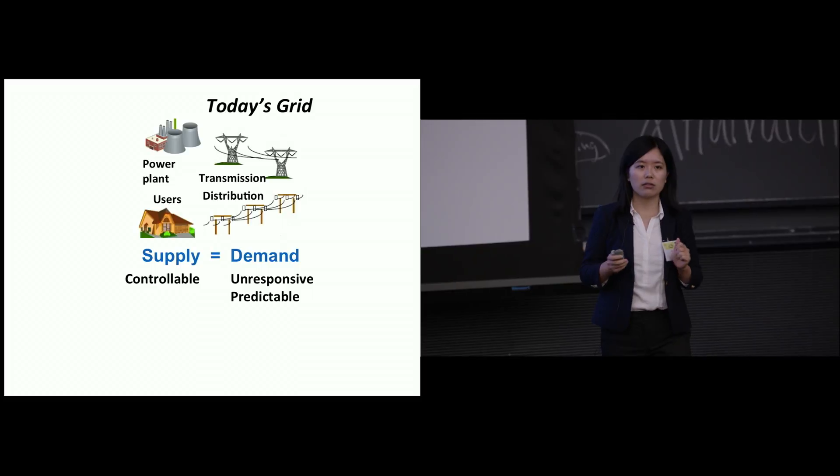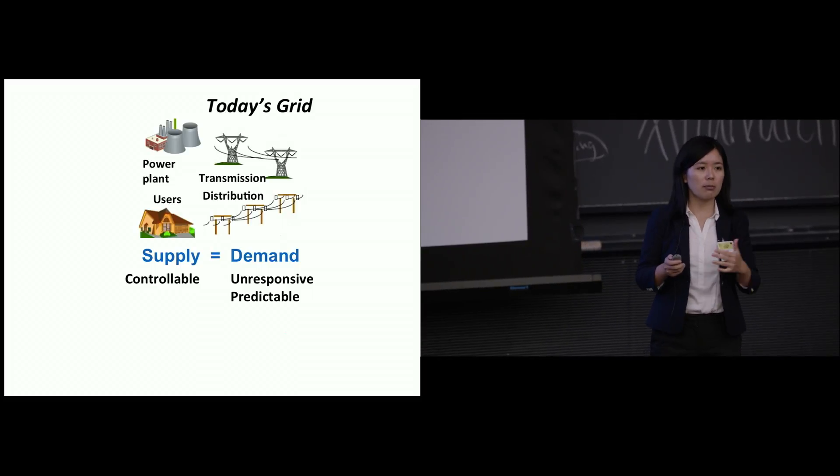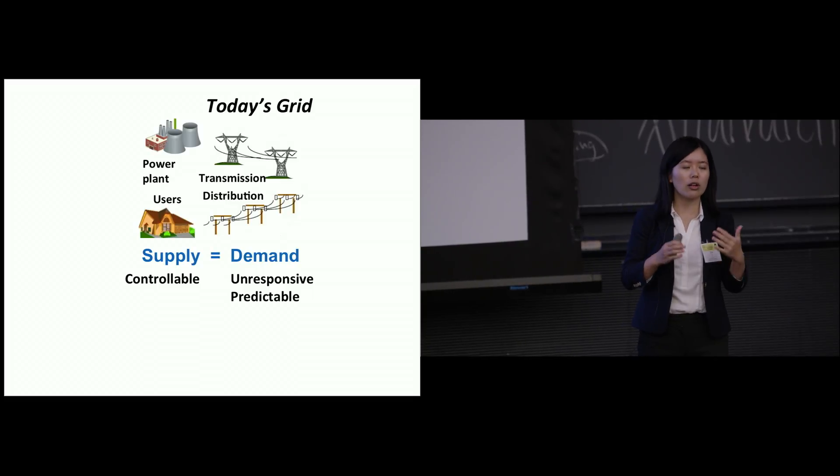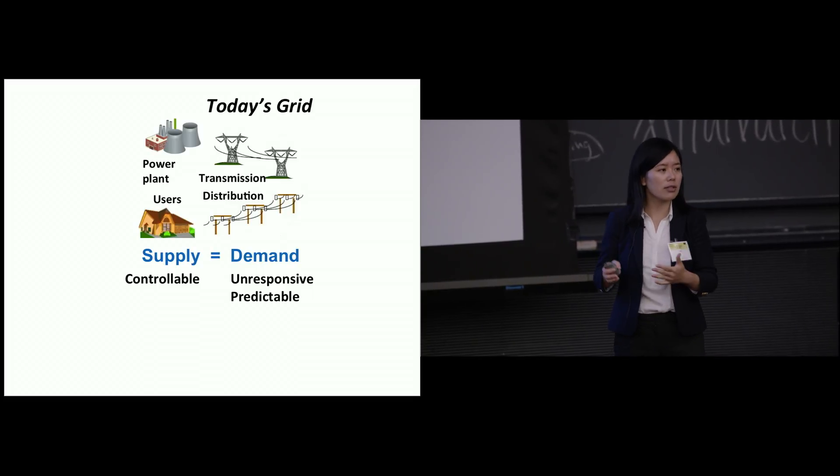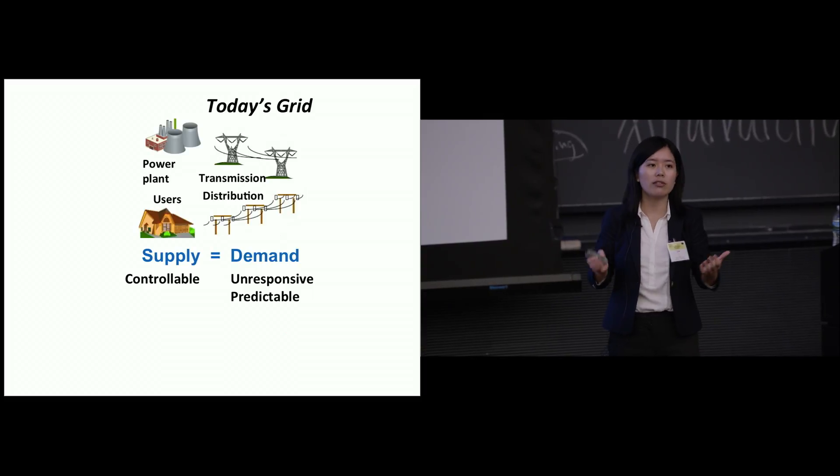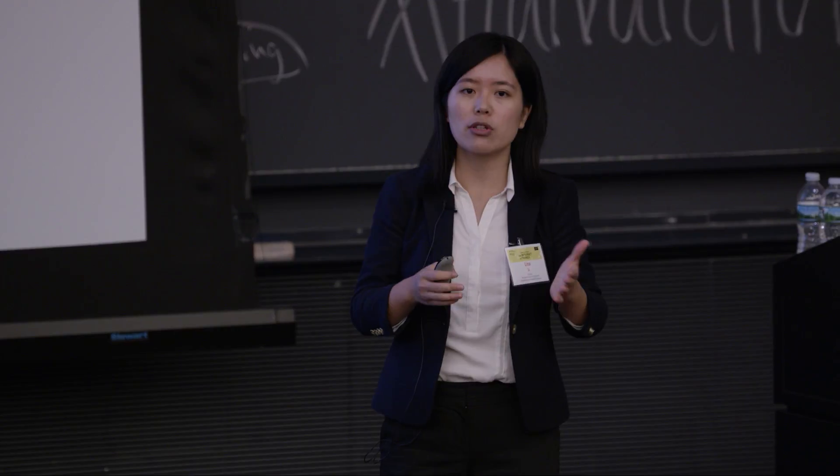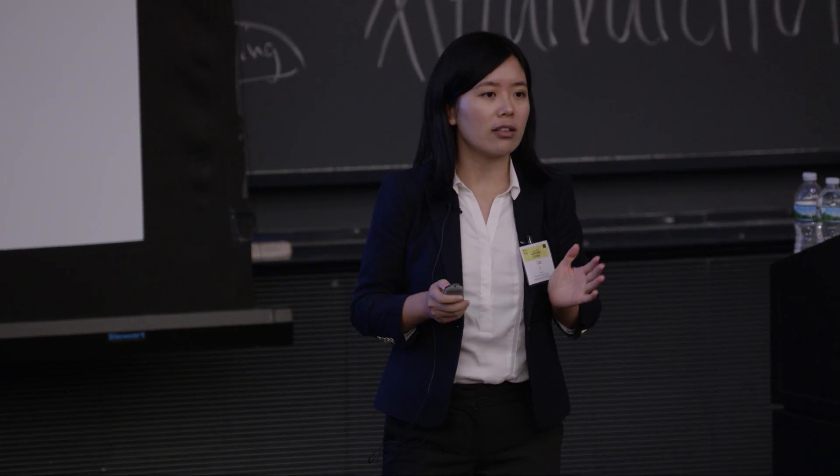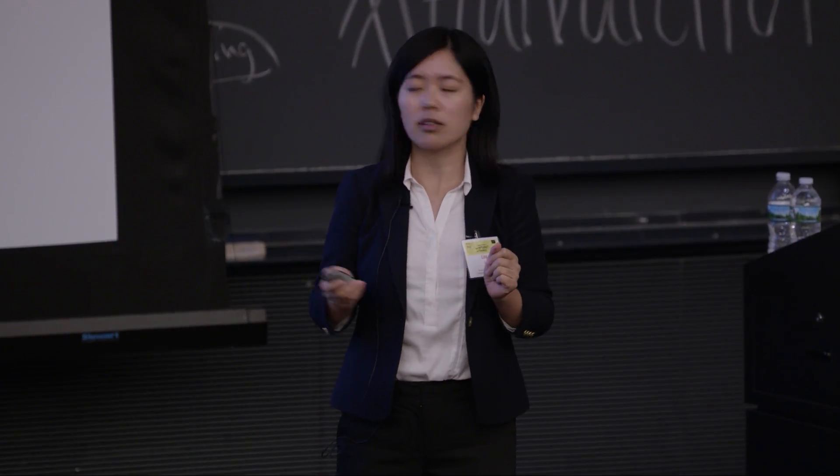So all the control part. Now we want to make sure supply equal demand. All the control part is pushed to the generation side. For the generation side we have market tools, optimization tools, engineering, computer science. We have to form all different kind of disciplines trying to make sure we can decide how much generation to generate to satisfy the demand.